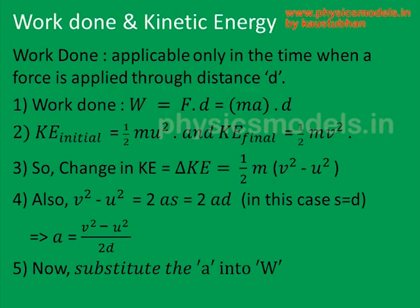Now let's work with the equations. Write down the work done, which is force times distance. Since the force is acting on the block and it accelerated, that's equal to mass times acceleration, so it becomes mA times d. Then plug in the kinetic energy initial — that's half mu squared — and kinetic energy final — that's half mv squared. Therefore, the change in kinetic energy is half m times (v squared minus u squared). Then plug in the velocity equation where v squared minus u squared equals 2as, which in this case is 2ad.